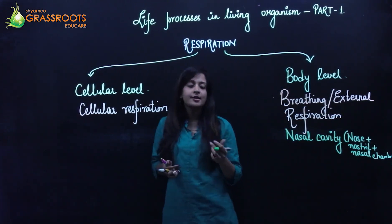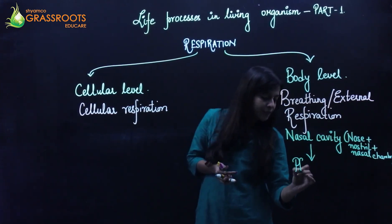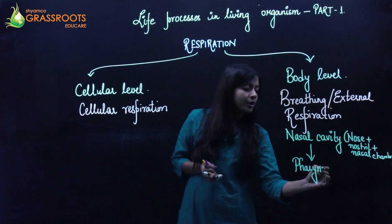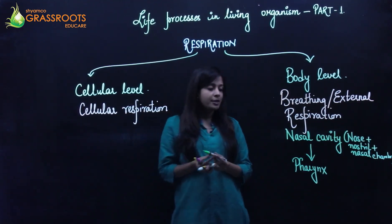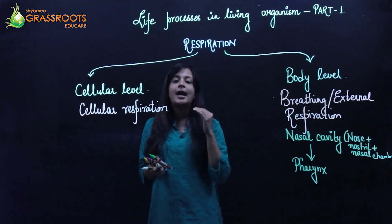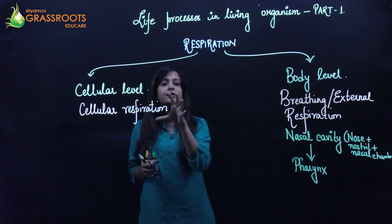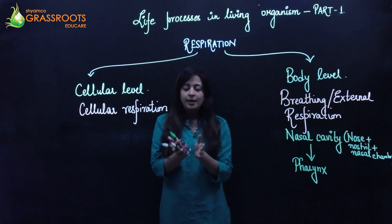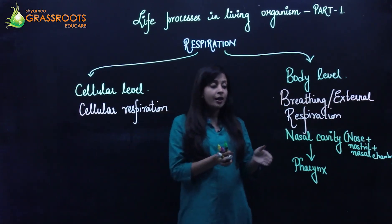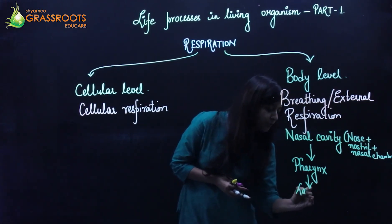After the nasal cavity, the respiratory tract involves the pharynx. The pharynx is the common passageway for both food and air. When food or water goes in, it passes through this common passage. After that, it has two pathways: if it is part of the digestive system, it goes into the esophagus; but if it is with respect to respiration, it goes into the next part.